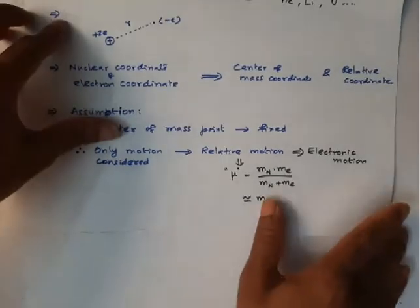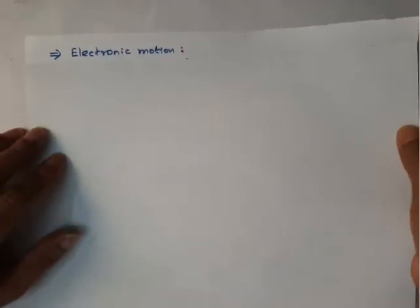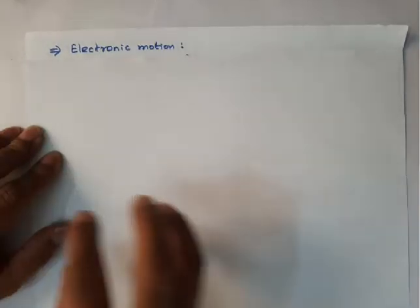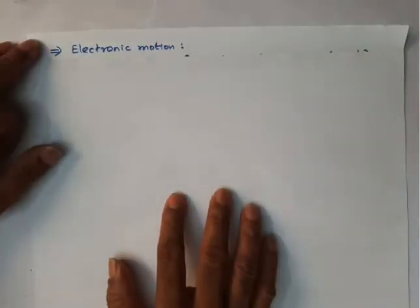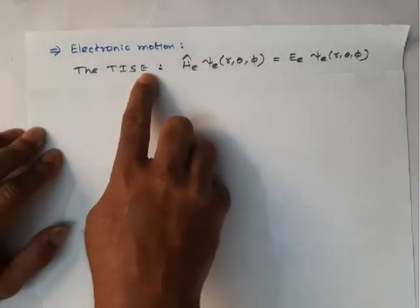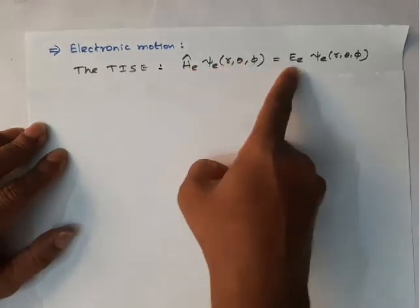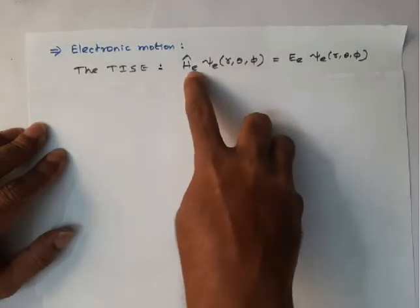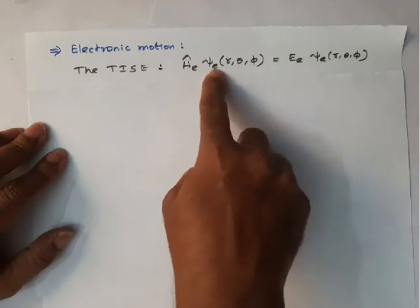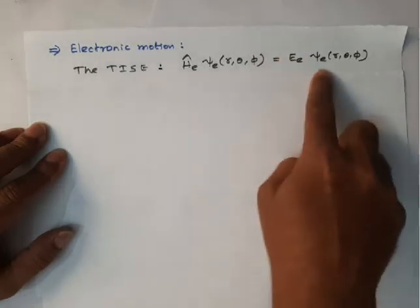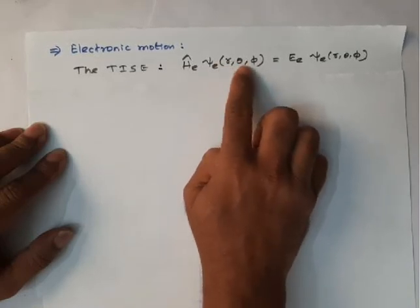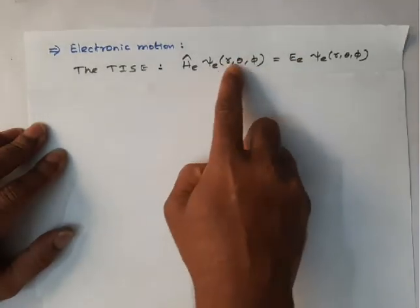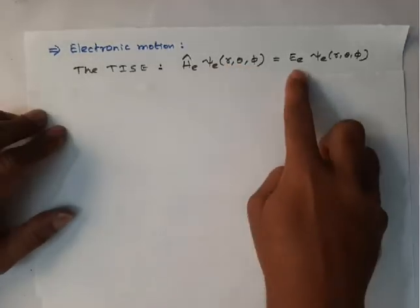Our focus is only on electronic motion. For electronic motion, the time-independent Schrödinger equation can be written as Ĥ_e ψ_e = E ψ_e, where the subscript e denotes electronic motion. So we have the electronic Hamiltonian, electronic wave function, and electronic energy. The wave function depends on the three spherical polar coordinates r, θ, and φ, and E is the electronic energy.